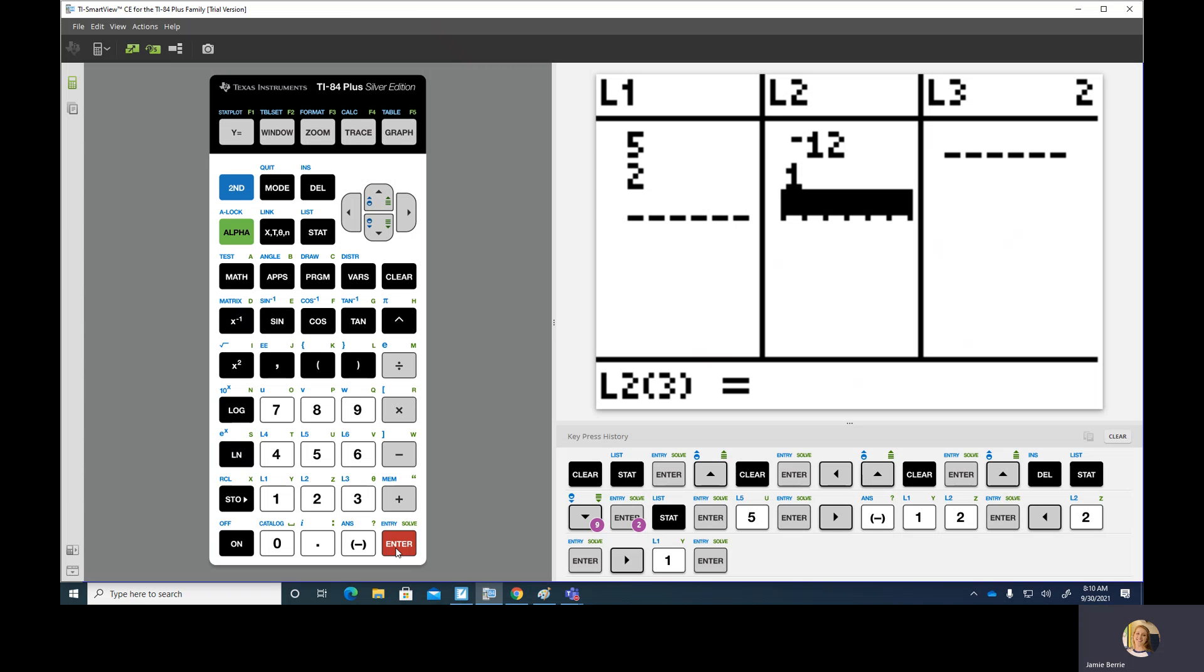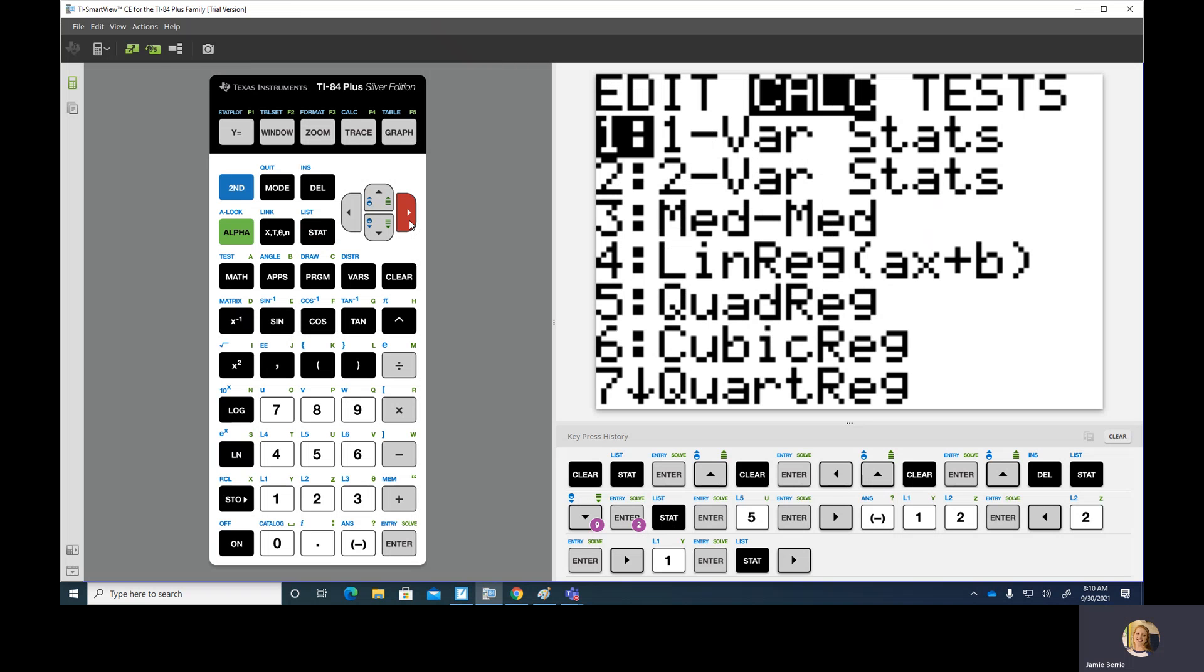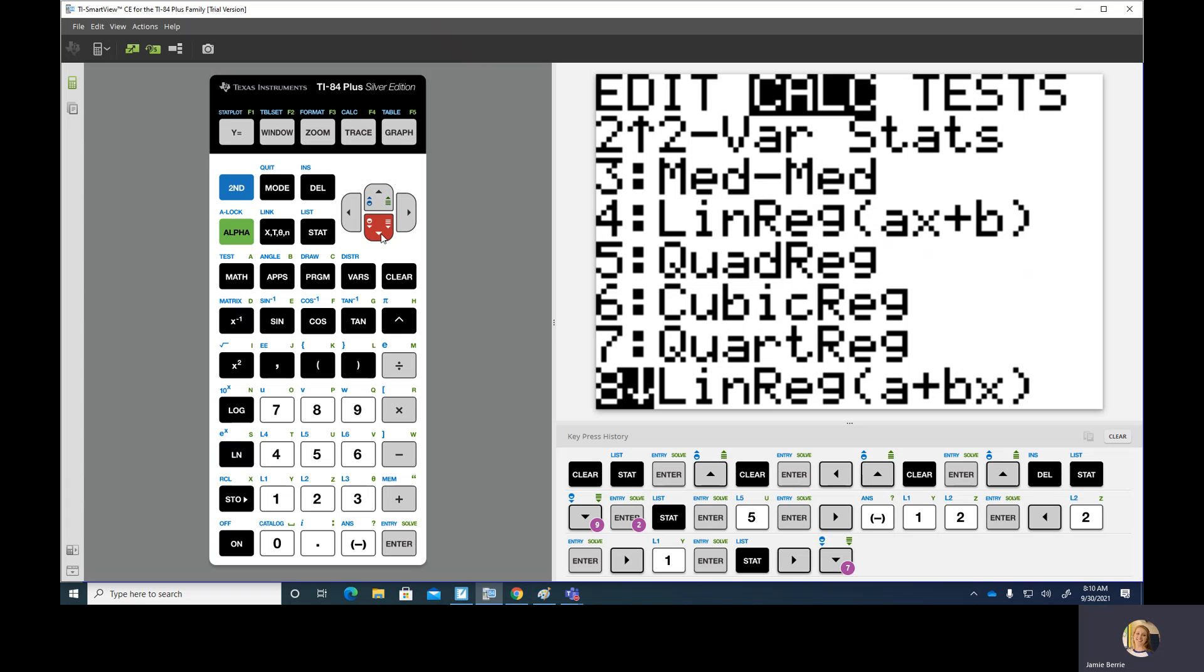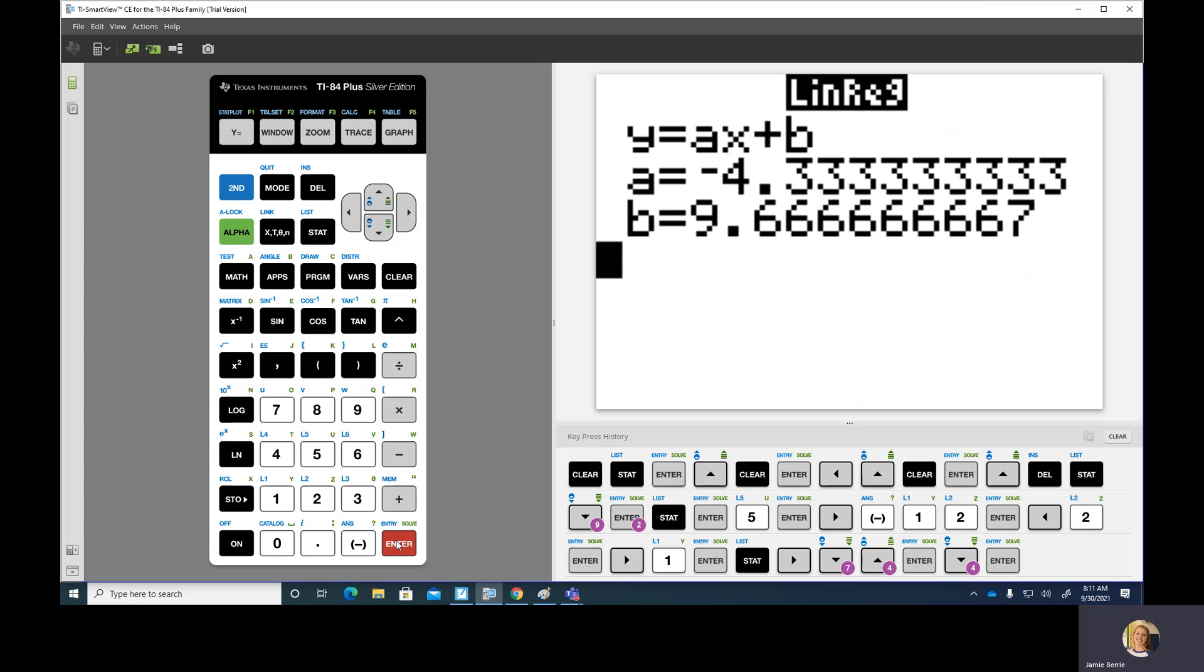You'll want to either write these steps down on your formula sheet or have them memorized. So (5, -12) and (2, 1). Go to stat, then do the first option which is edit. Clear out anything you have in here. Remember how we do that? Go to the top, hit clear, enter. Go over here to L1, go up to the top, hit clear, enter. Remember what we don't want to do is go up to the top and hit delete, because that's going to delete the whole column.